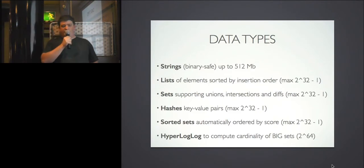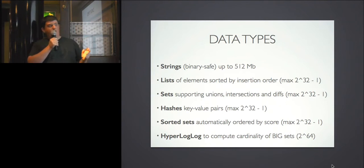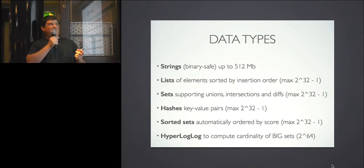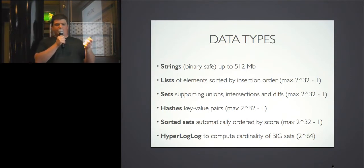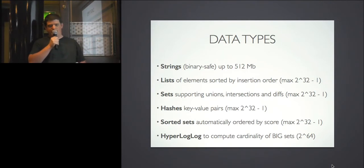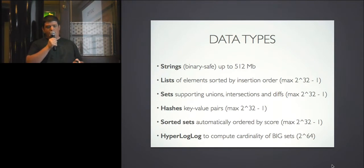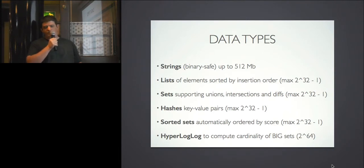These are the different data types in Redis. Of course there are strings — binary safe, up to 512 megabytes (compared to Memcached's 1MB limit). Then the interesting structures: lists, where elements are sorted by insertion order; sets of unique elements with union, intersection, and diff operations — very useful for comparing sets; hashes, similar to PHP arrays; sorted sets — a structure that only exists in Redis, very useful for gaming rankings and leaderboards.